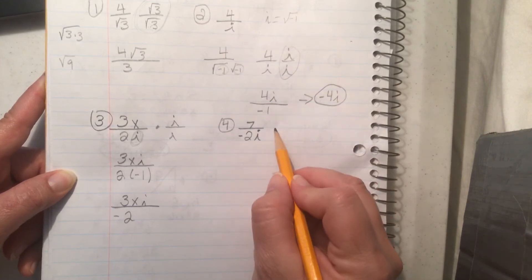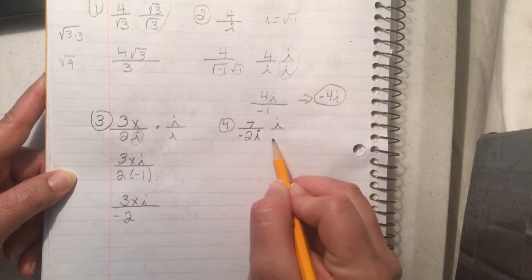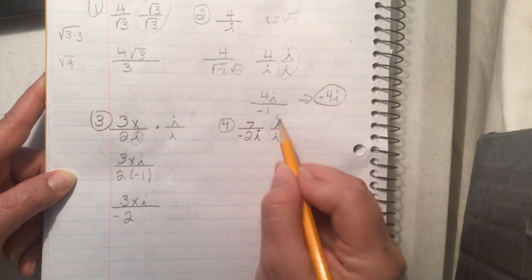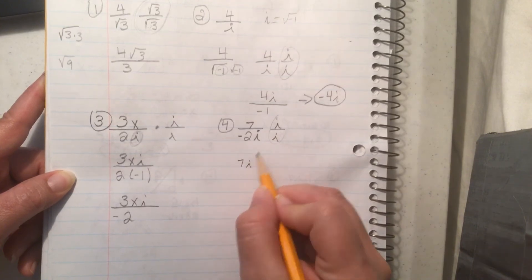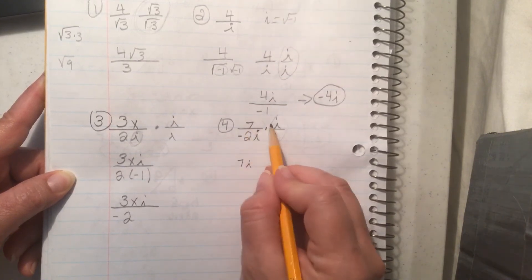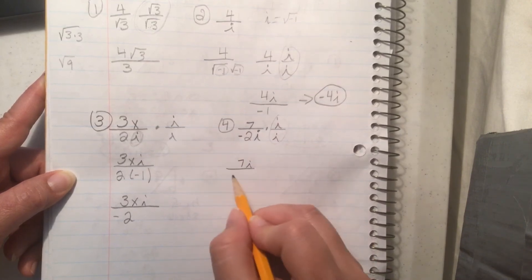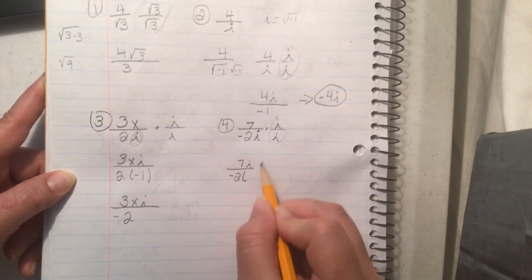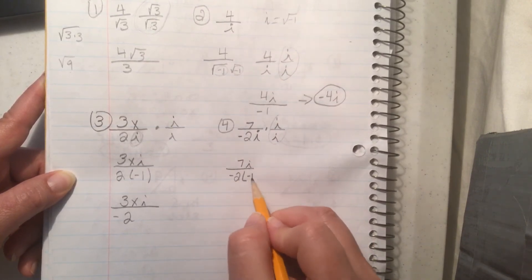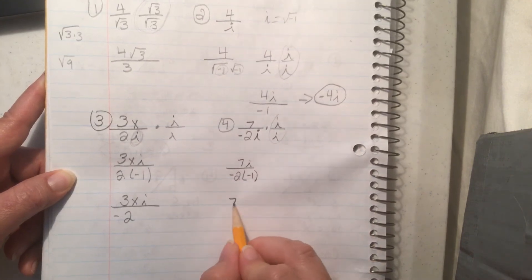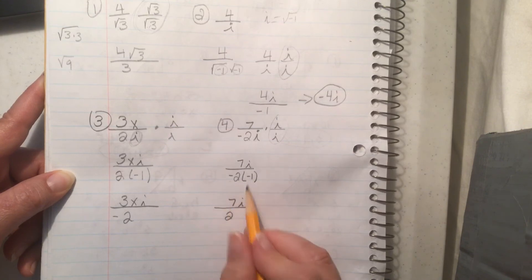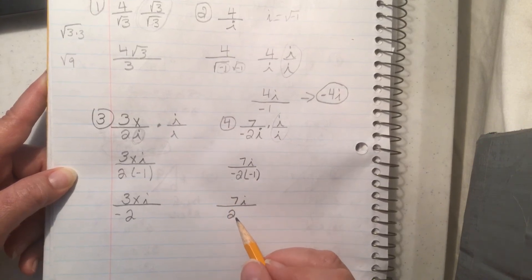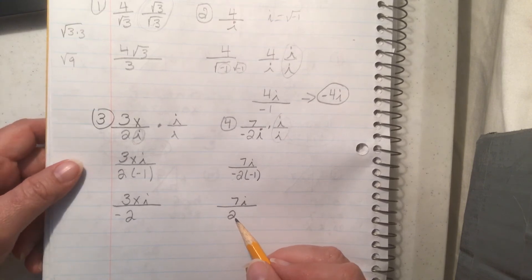Okay, you back? Still, multiplying the top times the bottom, top and bottom times i over i. That's going to give me 7i on the top and then this is going to give me negative 2 times negative 1 so that's going to give me 7i over 2 because negative times negative is a positive. Not bad? I don't think it's too bad. I hope you don't think so either.